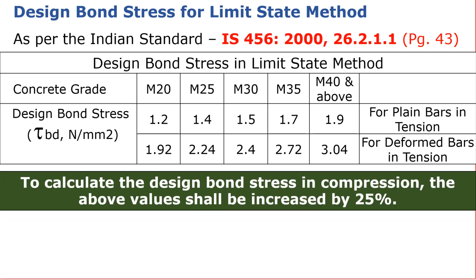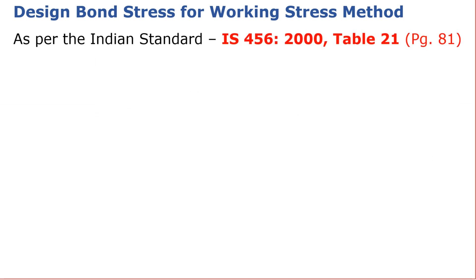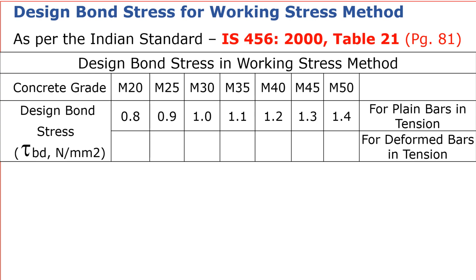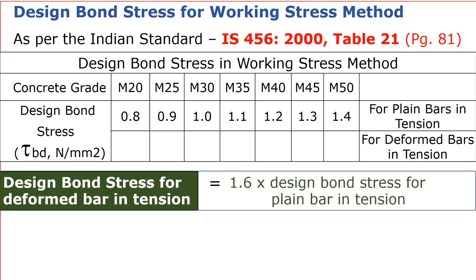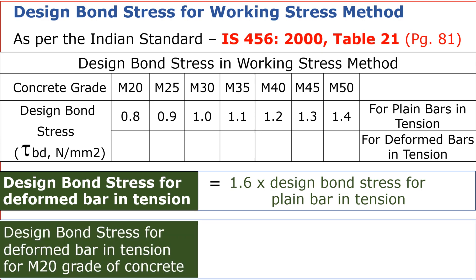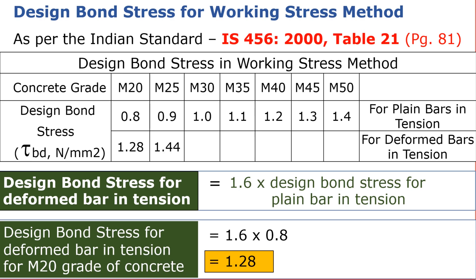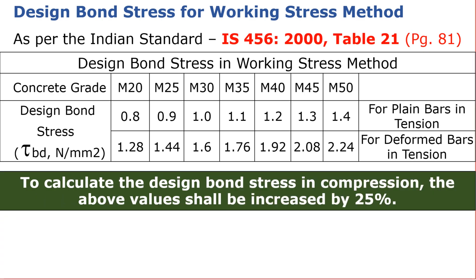To calculate the design bond stress in compression, the above value shall be increased by 25%. Now let us see design bond stress for the Working Stress Method as per IS 456:2000 on page number 81. You will find a table for design bond stress in the Working Stress Method. Again, for deformed bars conforming to IS 1786, these values shall be increased by 60%. Therefore design bond stress for deformed bar in tension = 1.6 × design bond stress for plain bar in tension. Thus for M20: 1.6 × 0.8 = 1.28 N/mm². Similarly we can find values for M25, M30, M35, etc. To calculate the design bond stress in compression, the above values shall again be increased by 25%.